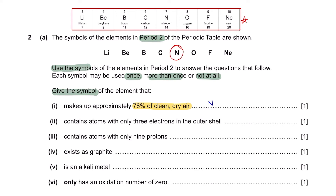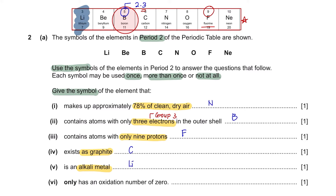Part 2: contains atoms with only 3 electrons in the outer shell — that means it is in group 3, which is boron. Part 3: contains atoms with only 9 protons — that would be fluorine. Part 4: exists as graphite — graphite is a crystalline form of carbon, so the symbol is carbon. Part 5: it's an alkali metal, which are elements in group 1 — so that would be lithium. Part 6: only has an oxidation number of 0, meaning it's a stable element from group 8 — that would be neon.